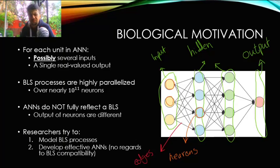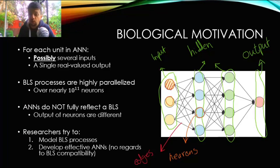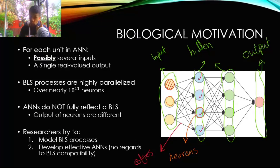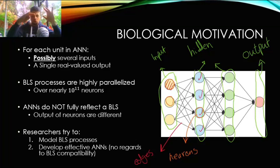In an artificial neural network, for every unit — every neuron — there are possibly several outputs. For example, one neuron in the next layer may connect to one, two, three, four other neurons. In an artificial neural network, typically every neuron's output is a single real-valued output. This is different from an actual biological neural network, because a neuron in your body doesn't generate just one constant value — it actually generates a complex time series of data that are correlated to each other, with meaning in the pattern it generates.